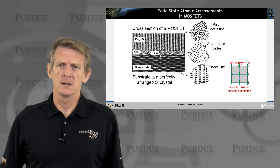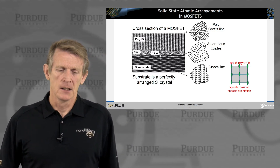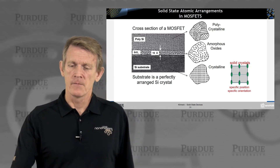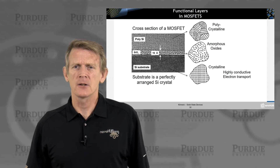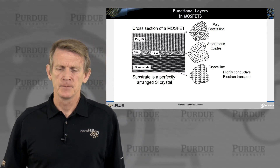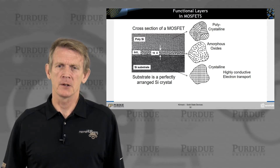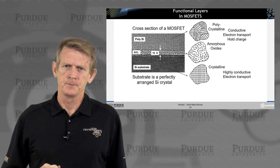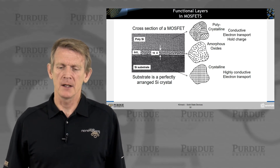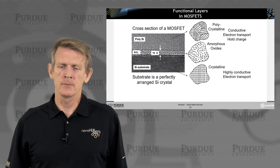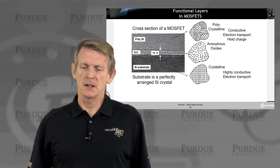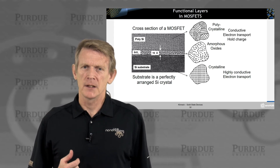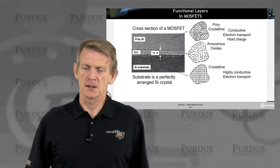And then in between you have amorphous oxides — typical silicon dioxide, as indicated here — very thin: 16 angstroms, 1.6 nanometers. At the bottom you have very highly conductive electron transport materials; that's where the core business of transport happens. On the top, that material is conductive, though not as conductive and controllable as the semiconductor material on the bottom — it holds charge, and it may be polycrystalline silicon or metals, which are clearly very conductive, but you can't modulate the conductivity in such materials very easily.